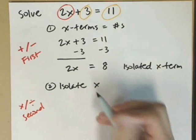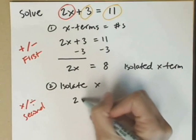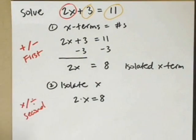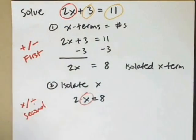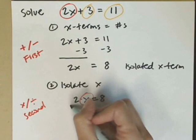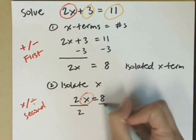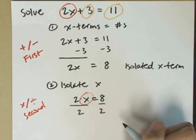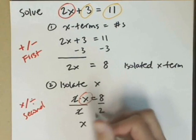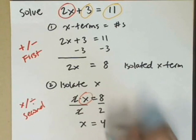That's exactly what we need to do next. We have 2 times x equals 8. I want x all by itself. It's being multiplied by 2. To undo that, I do just the opposite, and I divide by 2 on both sides, which leaves me with these cancel. I am left with x on the left and 4 on the right.